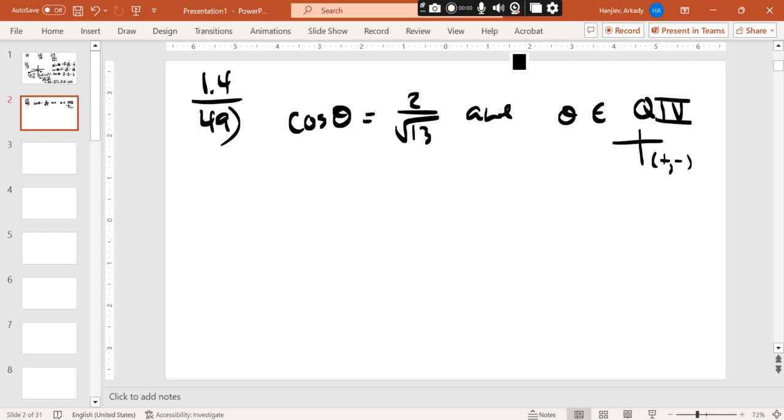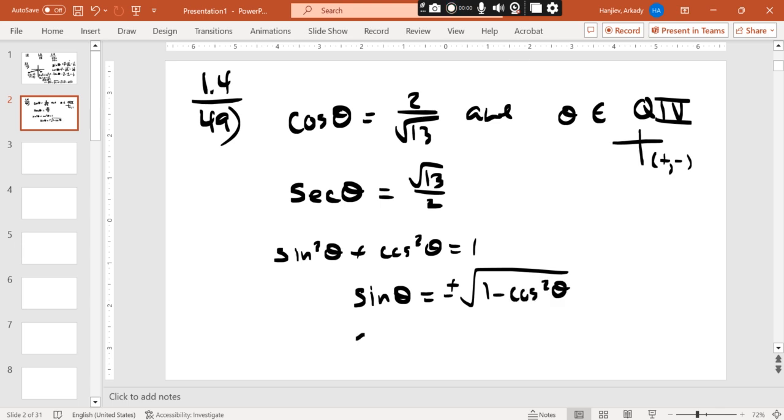Instead of going back to the unit circle or to the circle definition, we've made all these different connections last time. Cosine. If we know cosine, what's another one that we know right away, which is its reciprocal? Secant, right. Cosine and secant. They're just reciprocals of each other. Then after that, I think we need some kind of Pythagorean theorem. Sine squared theta plus cosine squared theta is equal to 1. Sine theta is equal to plus or minus 1 minus cosine squared. Which one do we want? We want the minus because we are in quadrant 4.